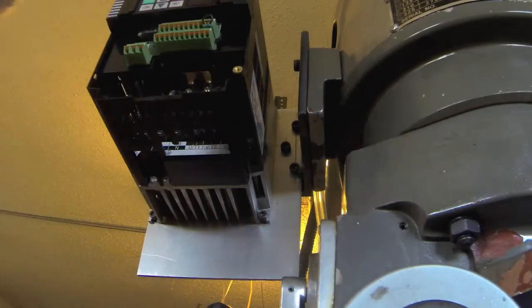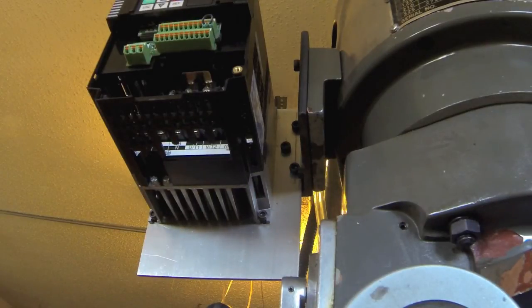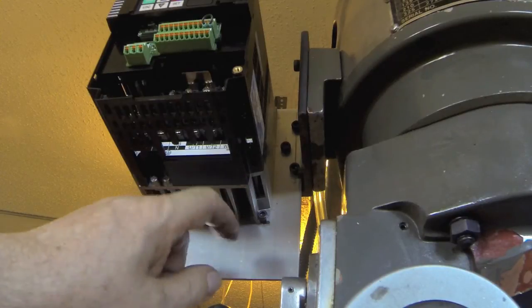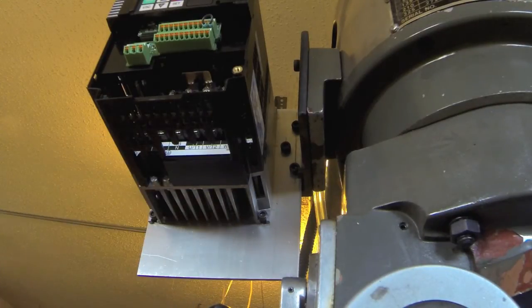The aluminum plate is held by three quarter-20 cap screws with lock washers and nuts. Then the VFD is mounted to this plate with 10-32 socket head cap screws with nuts on the back. I've got space down here to put a pot for controlling the speed and a switch, probably the switch over here and the pot here for forward, reverse, and stop. The pot is for the speed control.